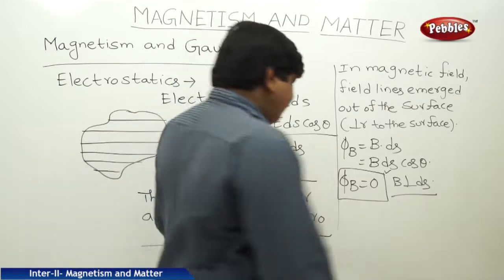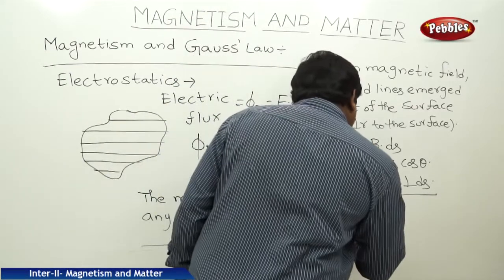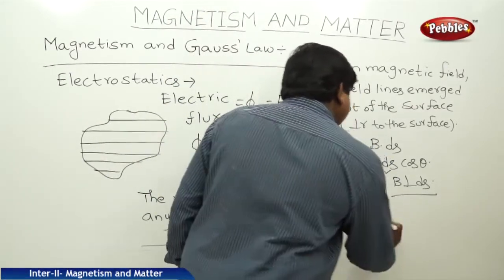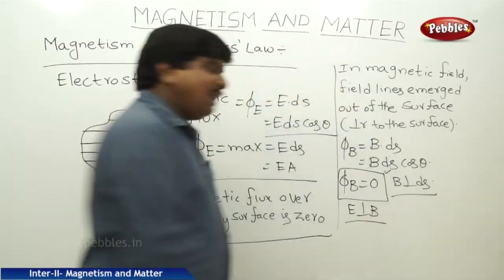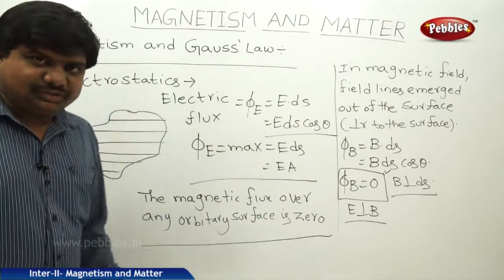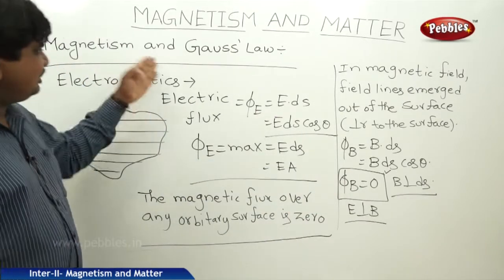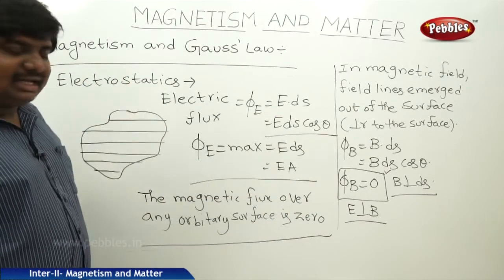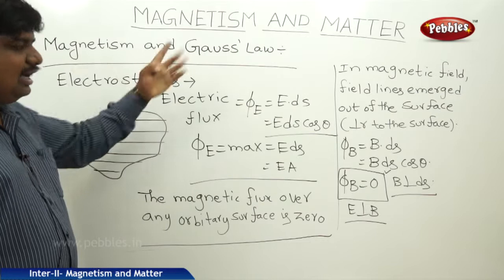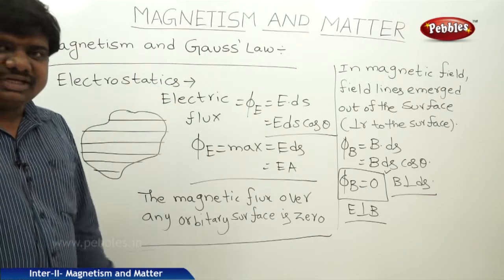Another way to understand this is that E is also perpendicular to B. If E is maximum, B is zero. This is said to be magnetism and Gauss law in magnetostatics.